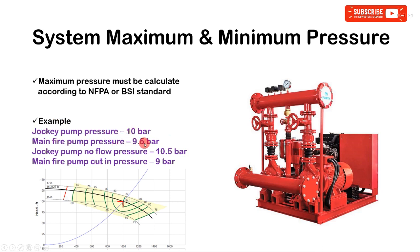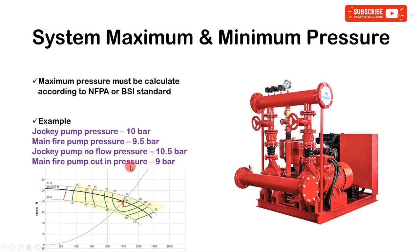The jockey pump no-flow pressure — that is, when flow rate is zero — is 10.5 bar. The main fire pump cut-in pressure is 9.5 bar and the cut-off pressure is 9 bar. These cut-in and cut-off pressures can be set using the pressure switches.